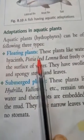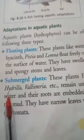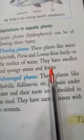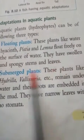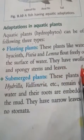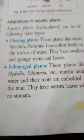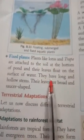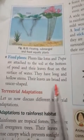Adaptation in aquatic plants — तीन तरह के aquatic plants होते हैं। Floating plants like Hyacinth — they have hollow and spongy stems and leaves। Submerged plants — they have narrow leaves with no stomata, इनकी पत्तियों में stomata नहीं पाया जाता। Fixed plants like lotus — they have long and hollow stems, और इनकी पत्तियाँ चौड़ी होती हैं।